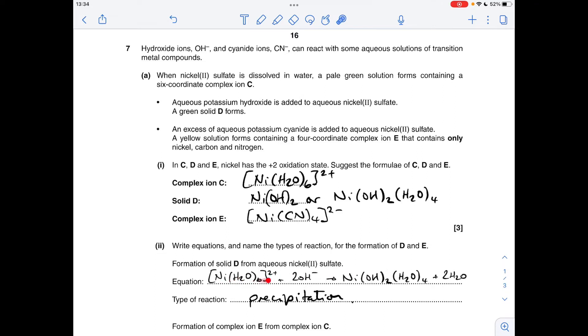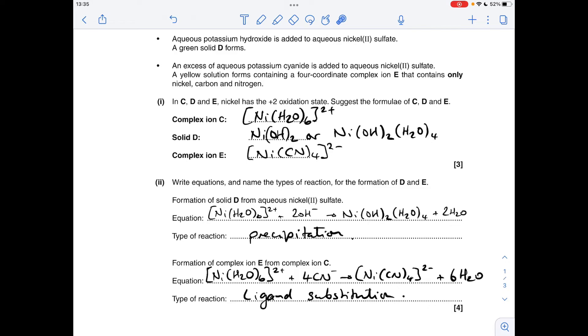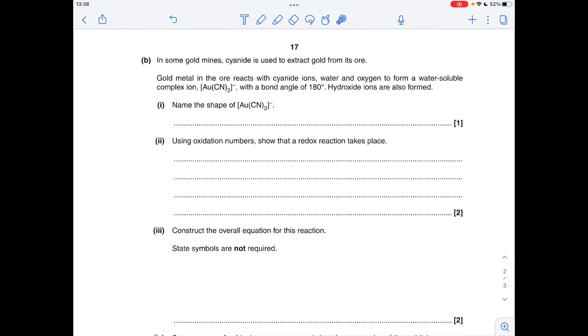Or you can give the full equation which looks like that. For the second equation, formation of complex E, that's the cyanide complex of nickel(II). We've got to give this equation, there's no option other than that one, and the type of reaction is ligand substitution.